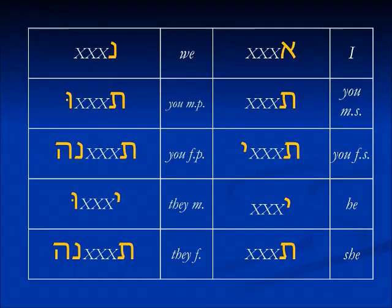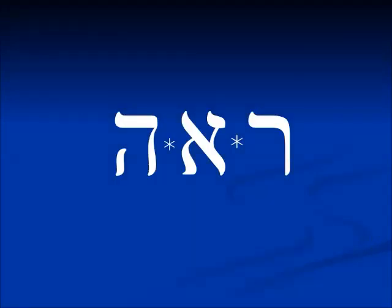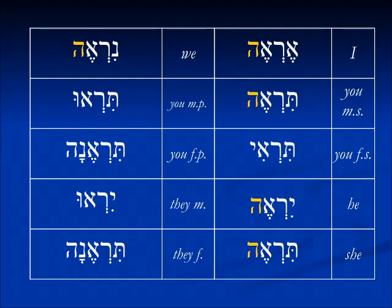Normally in a conjugation in the imperfect tense we would see this paradigm. We have a prefix of one letter, and some of the different forms have a suffix. We're just going to do some examples today to show how this works. The verb ra'a, resh alef hey, means 'to see.' If we were to conjugate it in the imperfect — I will see, you will see, you will see feminine, he will see — this is what it would look like.